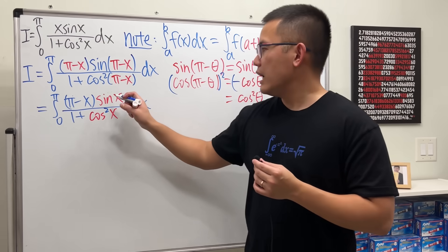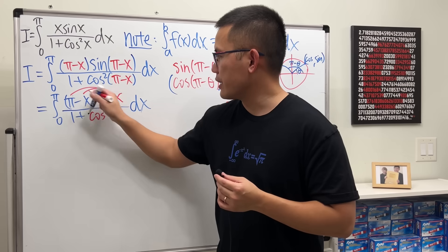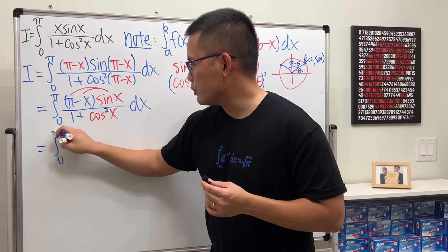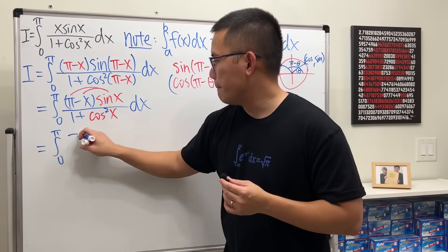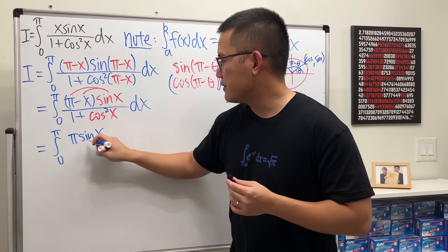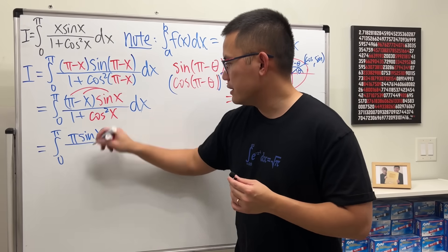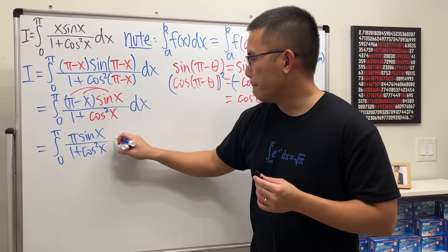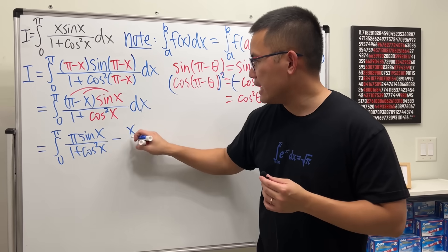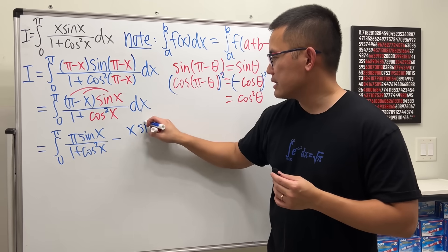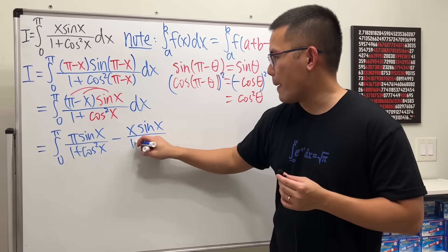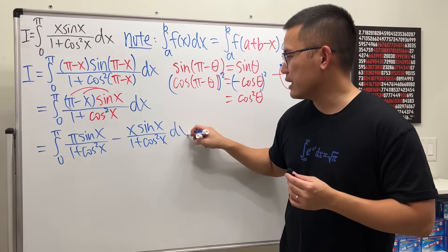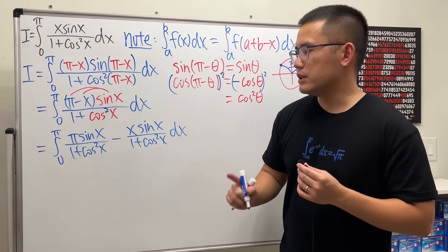Let me distribute the (π − x) · sin(x): I'll split it into π · sin(x) / (1 + cos²x) minus x · sin(x) / (1 + cos²x). So this becomes the integral from 0 to π of π·sin(x)/(1 + cos²x) dx, minus the integral from 0 to π of x·sin(x)/(1 + cos²x) dx.